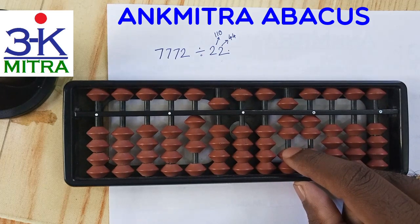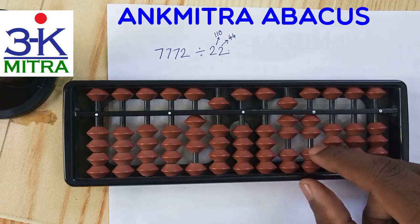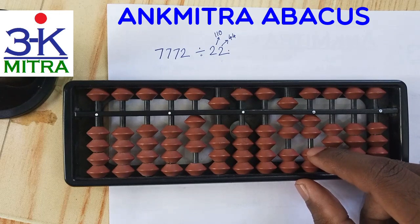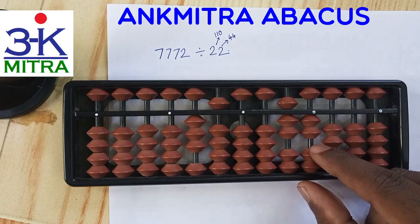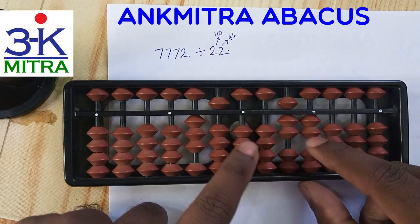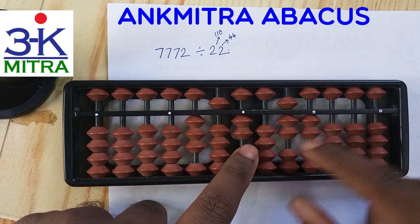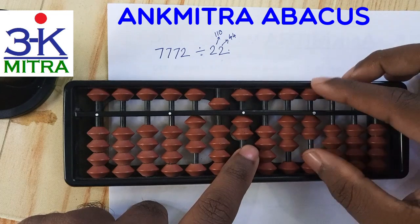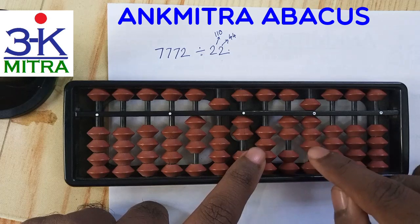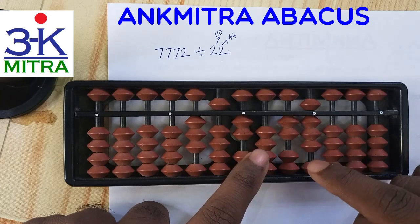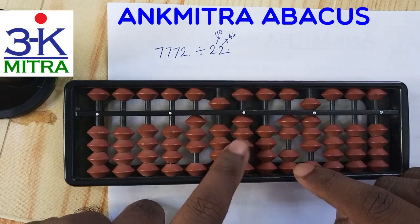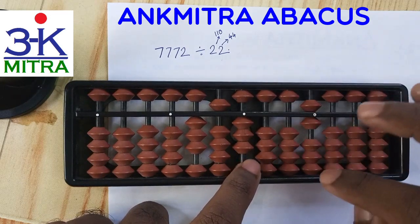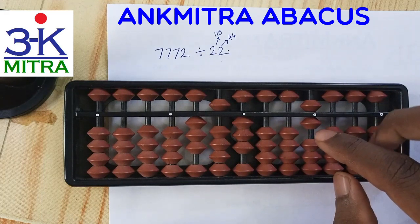Only 7 remains on this rod, so we move to the next rod. The number formed is 72. From 72 we can subtract 2 times 22, which is 44. I take 2 on the units place of the answer set and subtract 44 from 72: plus 1 minus 5 on this rod, and plus 6 minus 10 on the next rod. The remaining number is 28, which is still larger than the divisor, so we subtract 1 times 22 more, adding 1 to the answer set units place and subtracting 22. Finally, 6 remains, which is smaller than the divisor.